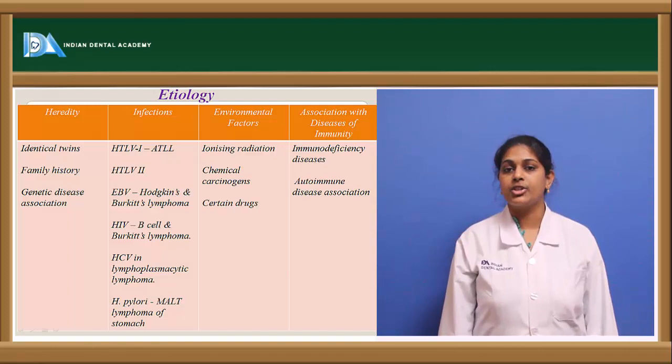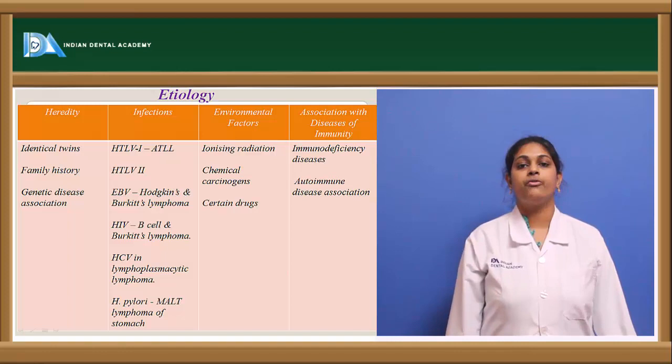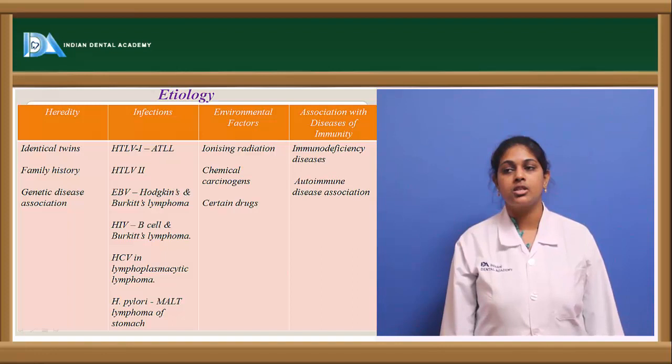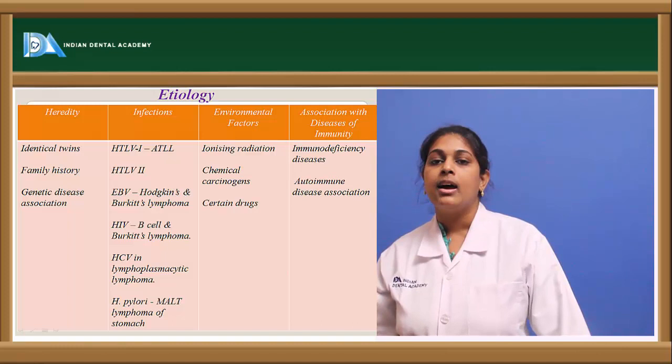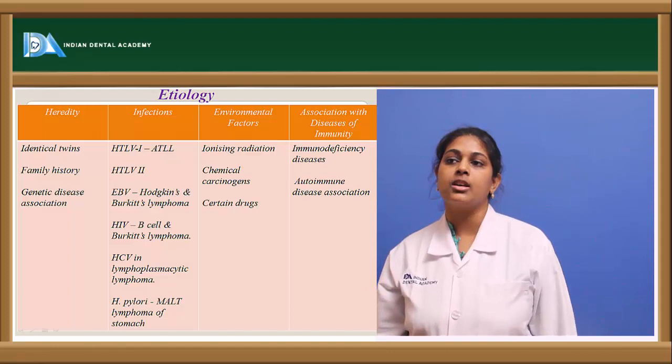Certain drugs such as alkylating agents and steroid therapy are also responsible for the development of leukemias and lymphomas. Immune deficiency syndromes such as HIV, autoimmune diseases including systemic lupus erythematosus and rheumatoid arthritis are conditions also associated with leukemias and lymphomas.